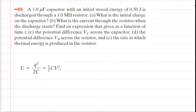A 1 microfarad capacitor with an initial stored energy of 0.5 joules is discharged through a 1 megaohm resistor. Part A: What is the initial charge on the capacitor?